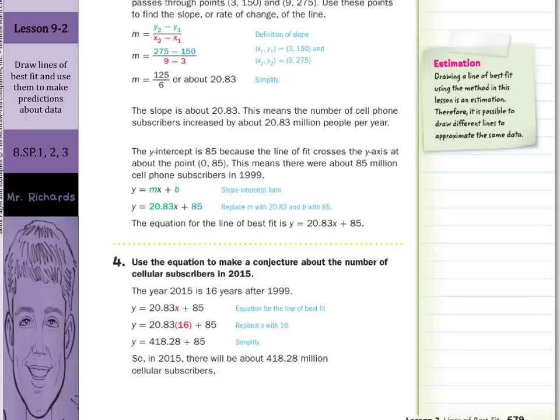And as you can tell, there's actually a little bit of an error here. When you multiply the 20.83 by the 16, that is 333.28. And when you add that to the 85 is when you get the 418.28 million cellular subscribers.